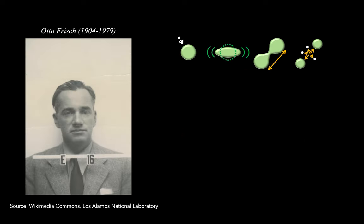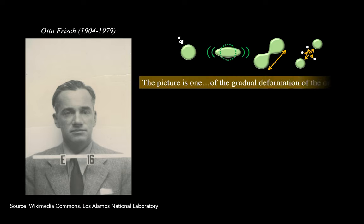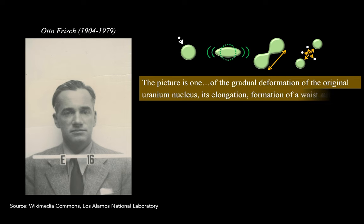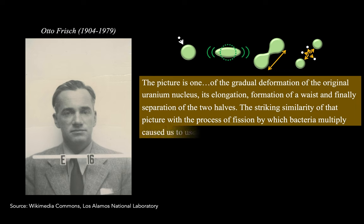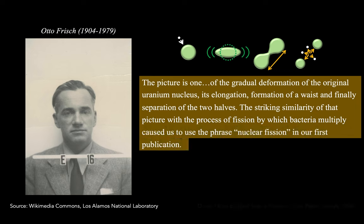Now, Otto Frisch himself has pretty evocatively described this process. He said, the picture is one of the gradual deformation of the original uranium nucleus, its elongation, formation of a waist, and finally separation of the halves, the striking similarity of that process with the process of fission by which bacteria multiply, of course, caused him to use the phrase nuclear fission. And in fact, he coined this phrase, getting direct inspiration from the process of binary fission through which many bacteria divide and multiply.